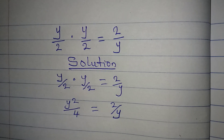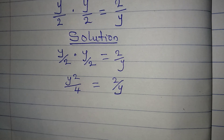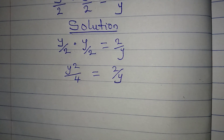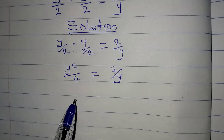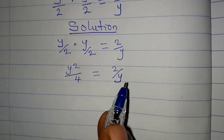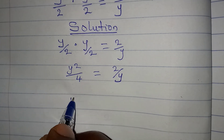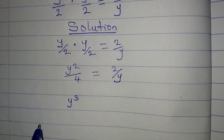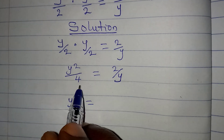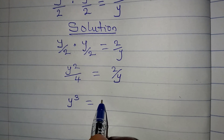We can then cross multiply. Cross multiplying gives y squared times y, which is y to the power of 3, equal to 4 times 2, which gives us 8.